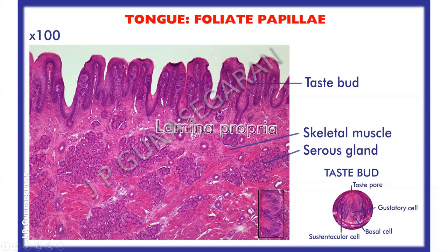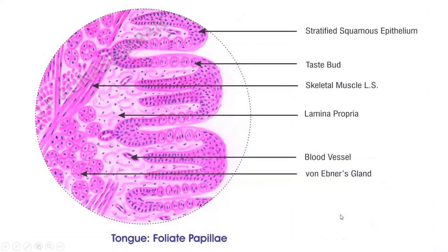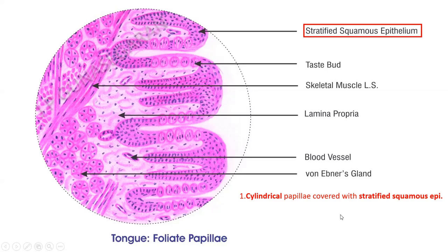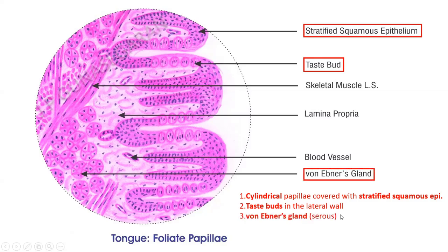This is a section of tongue showing foliate papillae. These papillae are well developed in rodents but rudimentary in humans. They are cylindrical in shape in section, lined by stratified squamous epithelium, with many taste buds on the lateral wall. The HND drawing identifies foliate papillae by their cylindrical shape covered by stratified squamous epithelium, taste buds on the lateral wall, and von Ebner's glands among the skeletal muscle fibers cut in different directions.